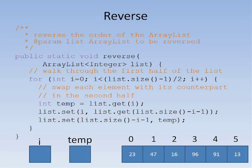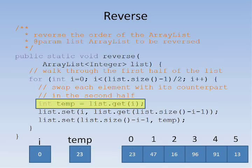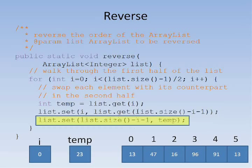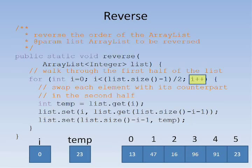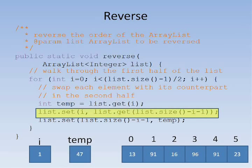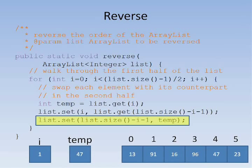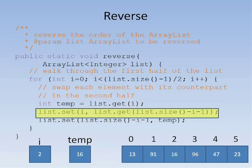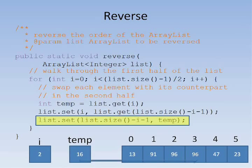The method reverse demonstrates how to use get and set. The method loops through the first half of the array, getting one item from the first half and its corresponding item from the second half and swapping them. We set i to 0, then move the 0th entry to temp, move the right side to 0, and move temp to the right side. Then i becomes 1, we move the first entry to temp, move the right side to 1, and move temp to the right side. The loop then completes and the entries are all reversed.